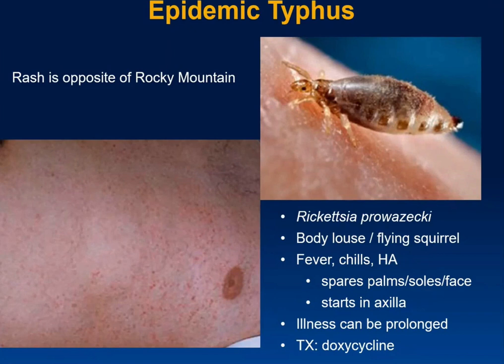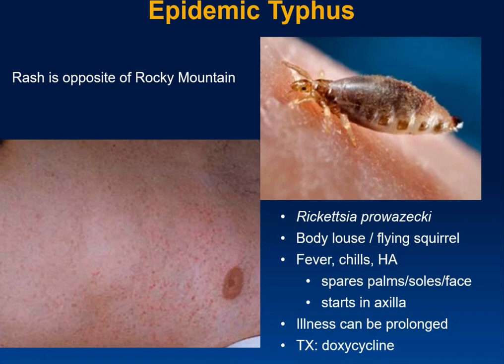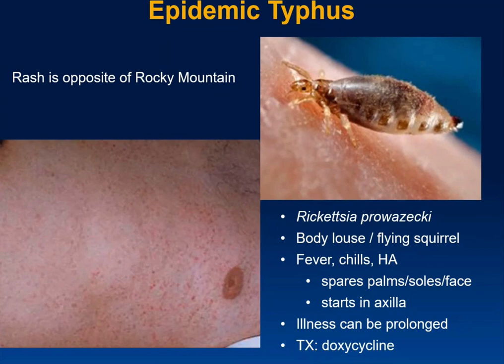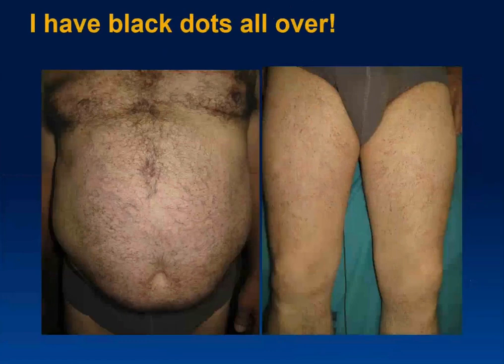The rash of body lice is the opposite of Rocky Mountain spotted fever. The most common rickettsia associated with it is Rickettsia prowazekii, which causes endemic typhus and can be found in flying squirrels. Manifestations include fever, chills, and headache. The rash spares the palms, soles, and face, generally starting in the axillary areas and spreading in a truncal distribution. The illness can be prolonged, and the treatment of choice is doxycycline.